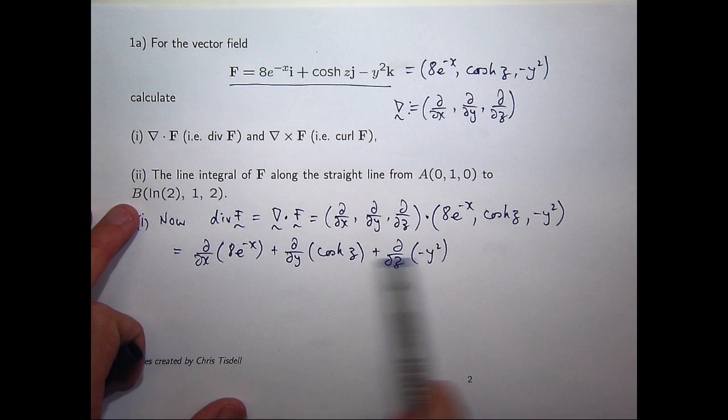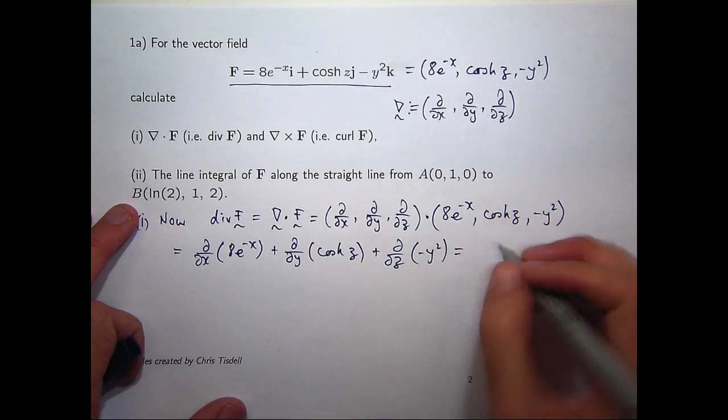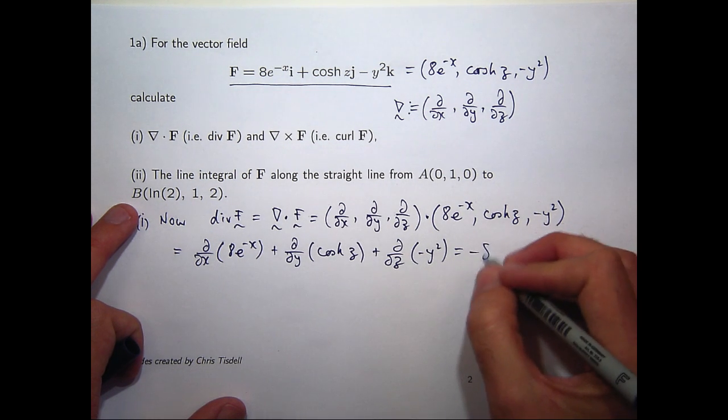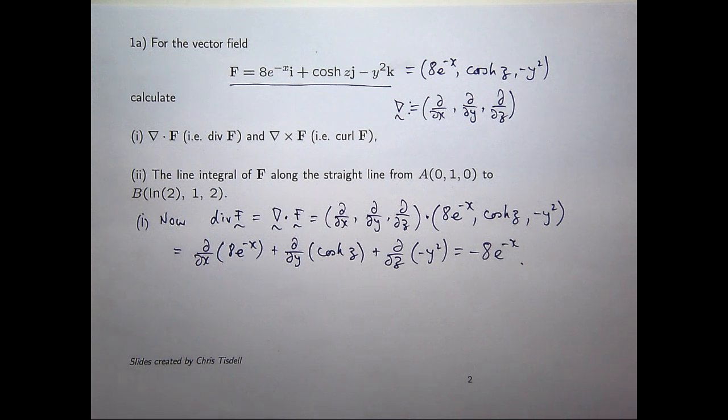OK, now these two are just going to become 0, and this one's going to be something like minus 8e to the minus x. Note that our answer is not a vector. Our answer is a scalar function. So this is one of the differences between what you start with and what you finish with when the divergence is involved.